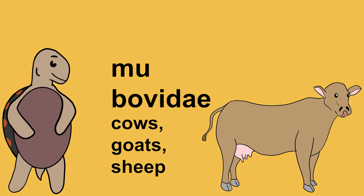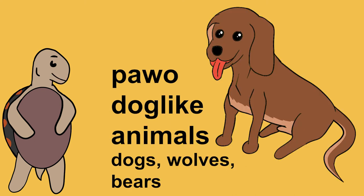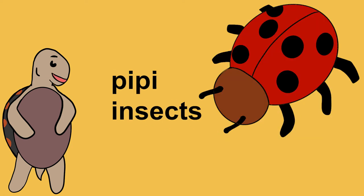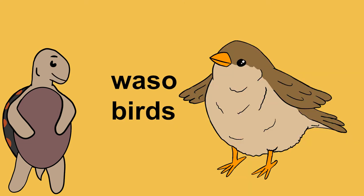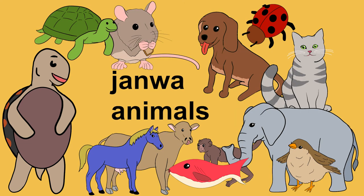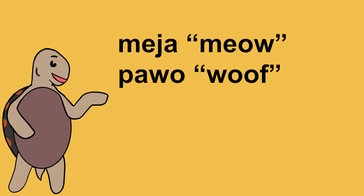'Nehe' for equids like horses, donkeys and zebras; 'pao' for dog-like animals like dogs, wolves and bears; 'pipi' for insects; 'soeli' for all mammals — you should already know this word; 'waso' for birds; 'yanua' for all animals. Many of these words try to sound like the animal, like 'mea' and 'pao.'